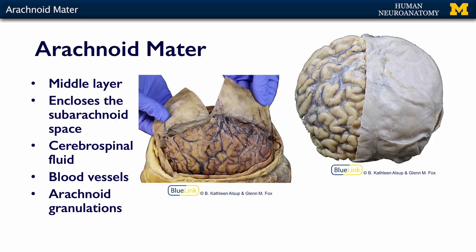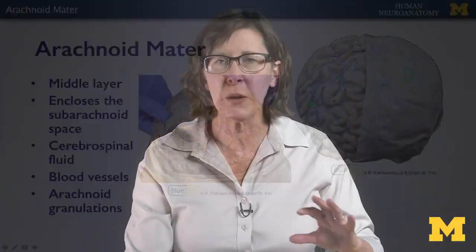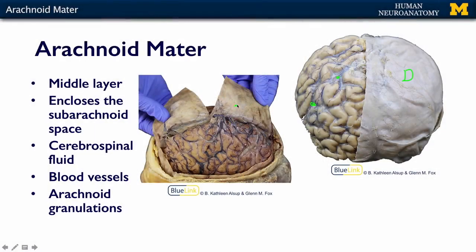So on these images, we can see that the dura is present here, and the arachnoid is this filmy layer that you can kind of see in some of these areas. In life, it would be more suspended and thicker. Here you can see how if you pull up on the dura, you can see the blood vessels that are suspended in the arachnoid.